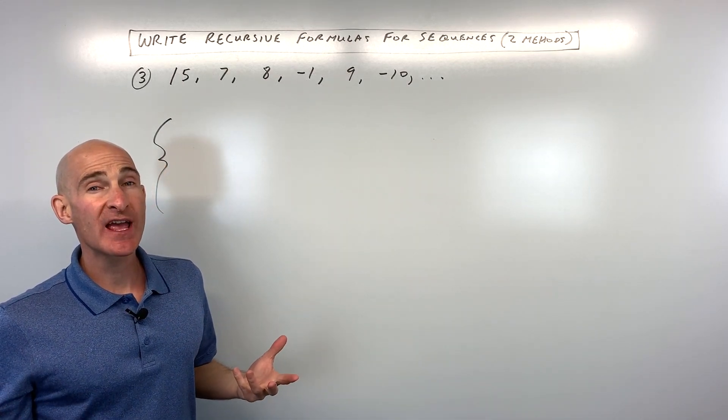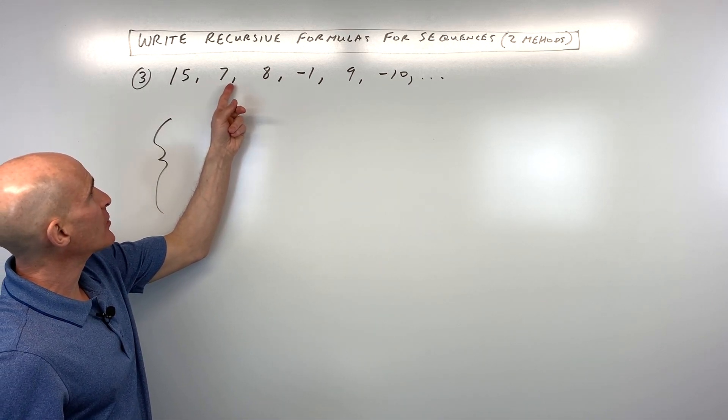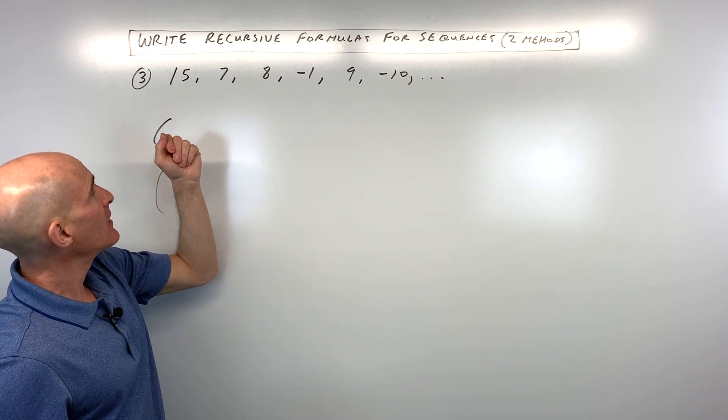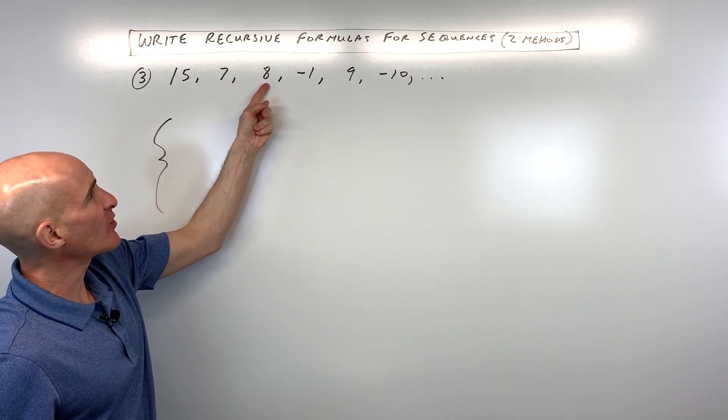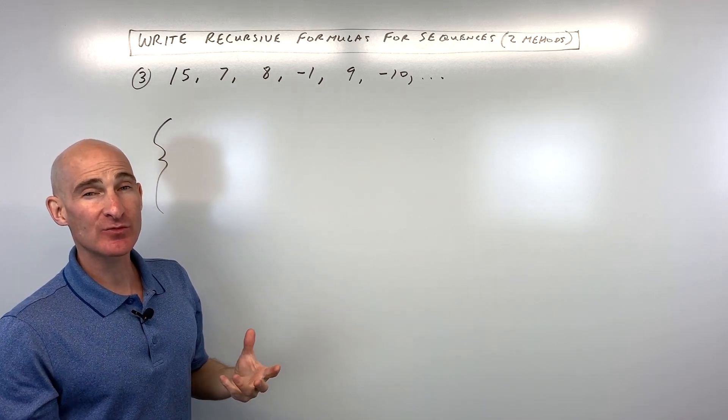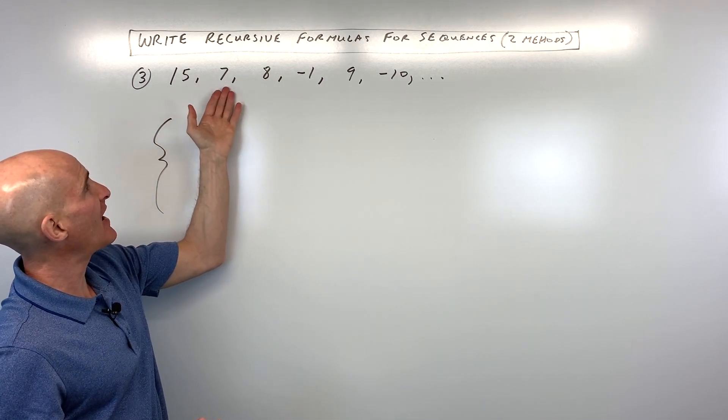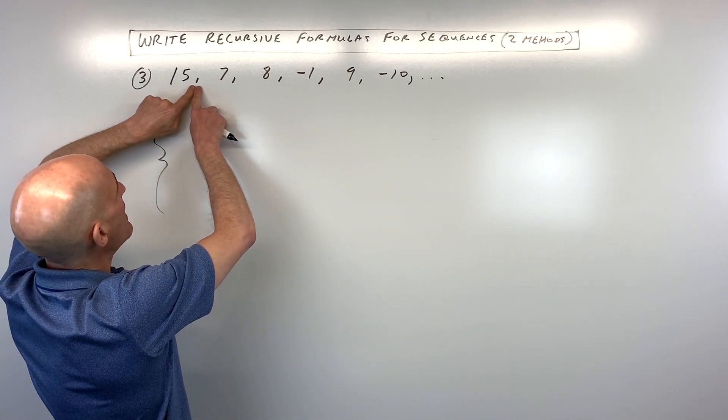Okay, number three is kind of a little bit more challenging. So see if you can follow this one with me. See if you can see the pattern here. What are we doing to get to the next term, next term, next term? Well, here it kind of looks like we're subtracting eight, but then here it looks like we're adding one. So it doesn't look like it's consistent as far as adding or subtracting the same thing. How about multiplying or dividing? No, there must be some other pattern, right?